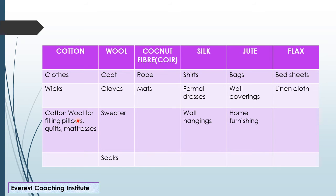Where do we use cotton wool? When you sleep in your house, you have pillows, quilts, mattresses, or soft toys — what do you use for filling? We use cotton wool for that. Now, wool — we get wool from animals. Cotton was our plant source; wool is our animal source, from sheep and yaks.